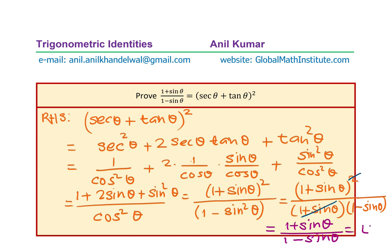So it is equal to the left hand side. You can begin from the right hand side and also show it equals the left hand side. Either way you will actually solve the identity. Adopt the method which best suits you. I hope that is interesting and useful. Feel free to write your comment and share your views. If you like and subscribe to my videos, that'd be great. Thanks for your time and all the best.